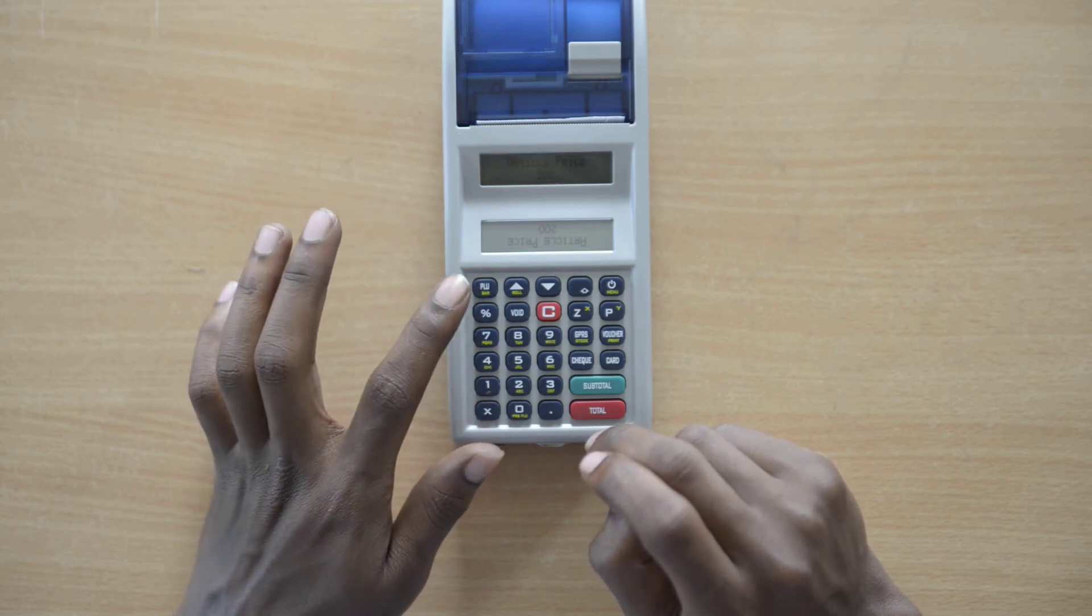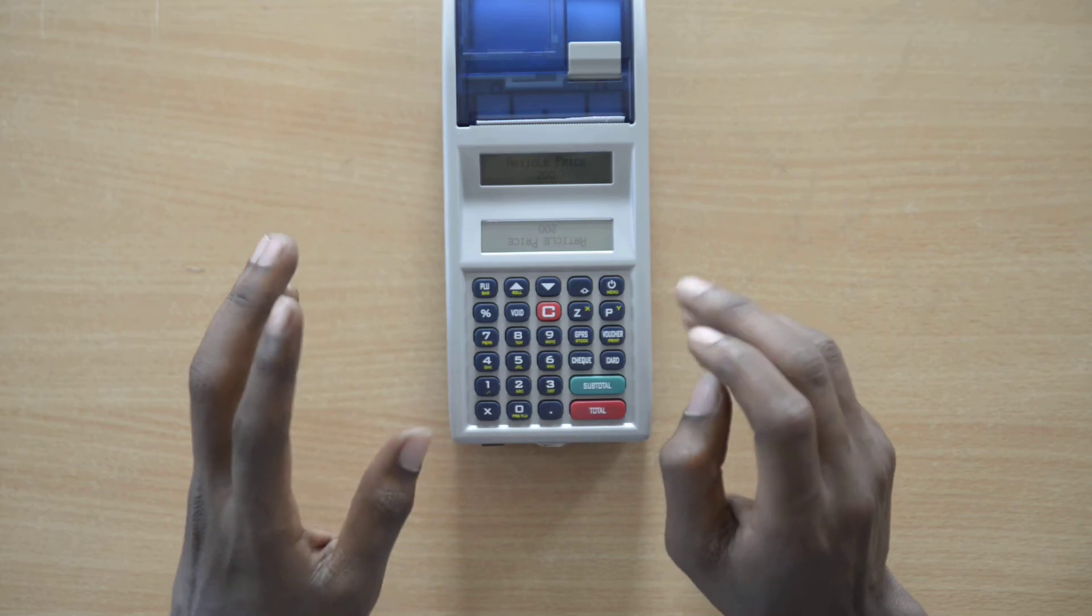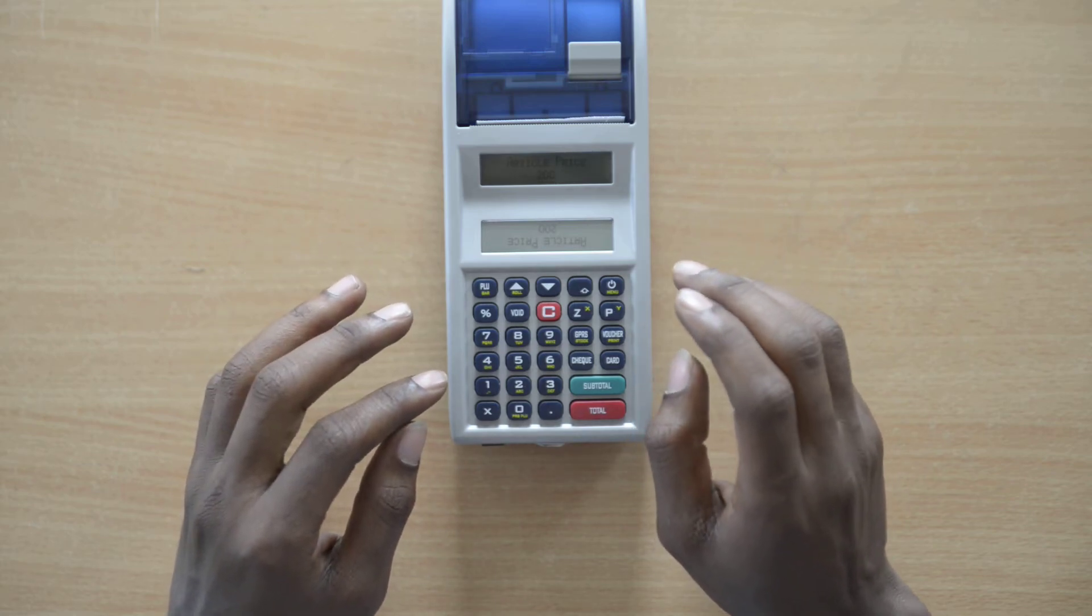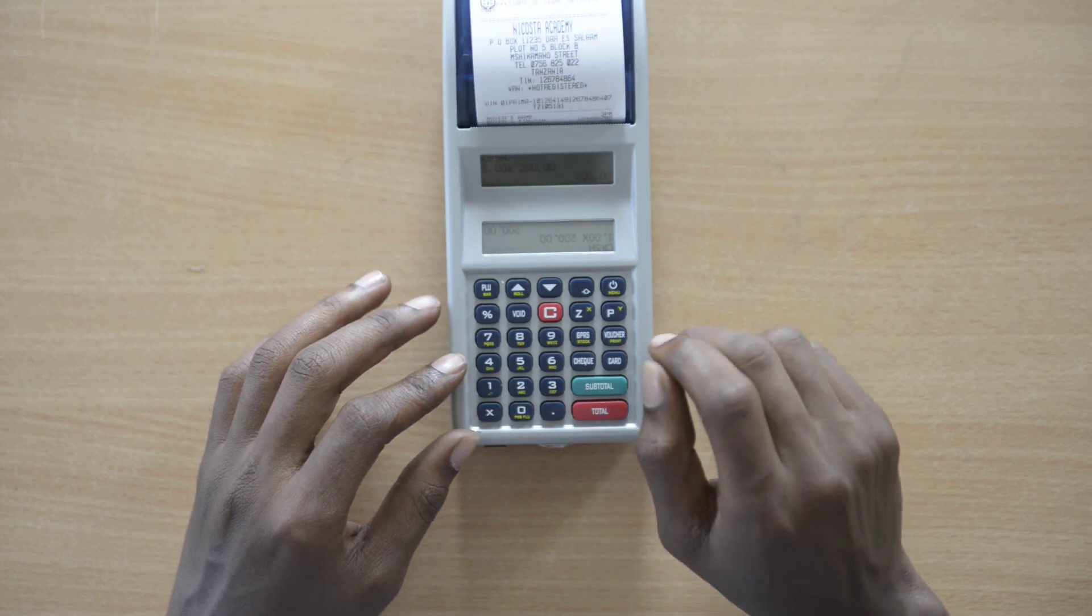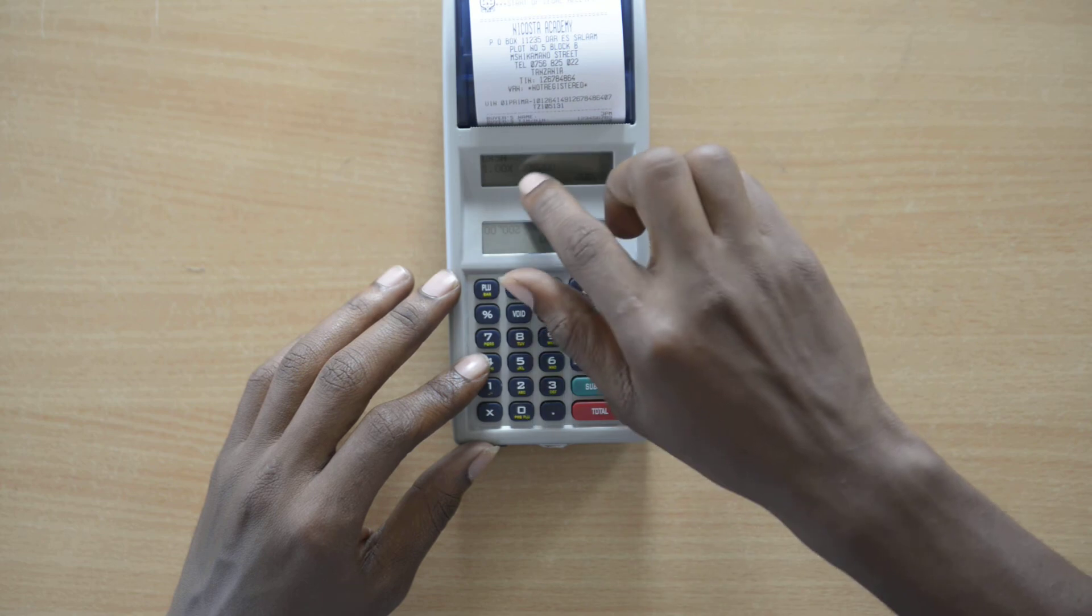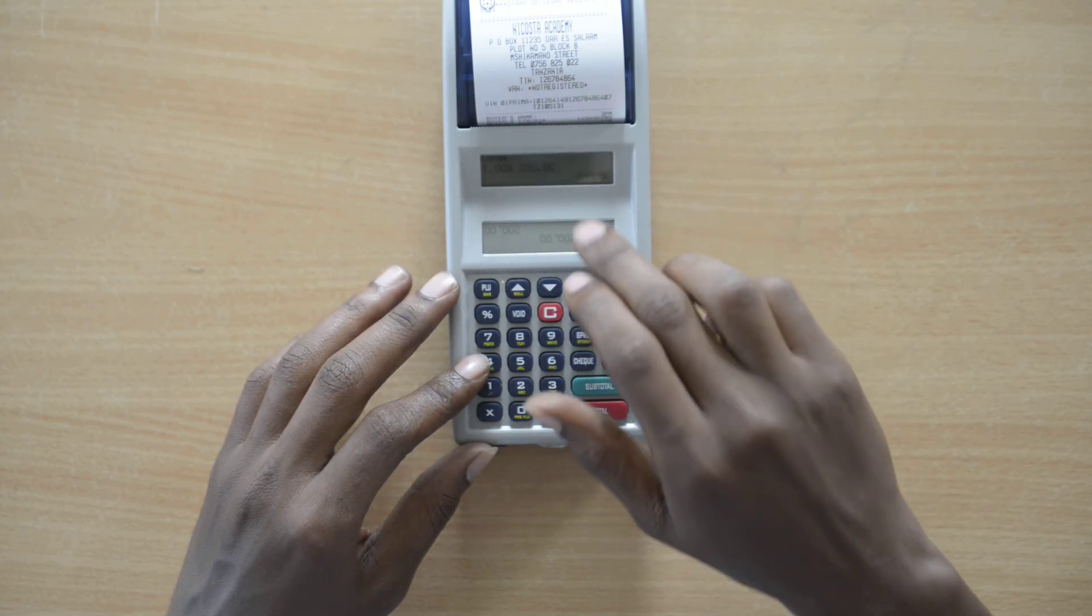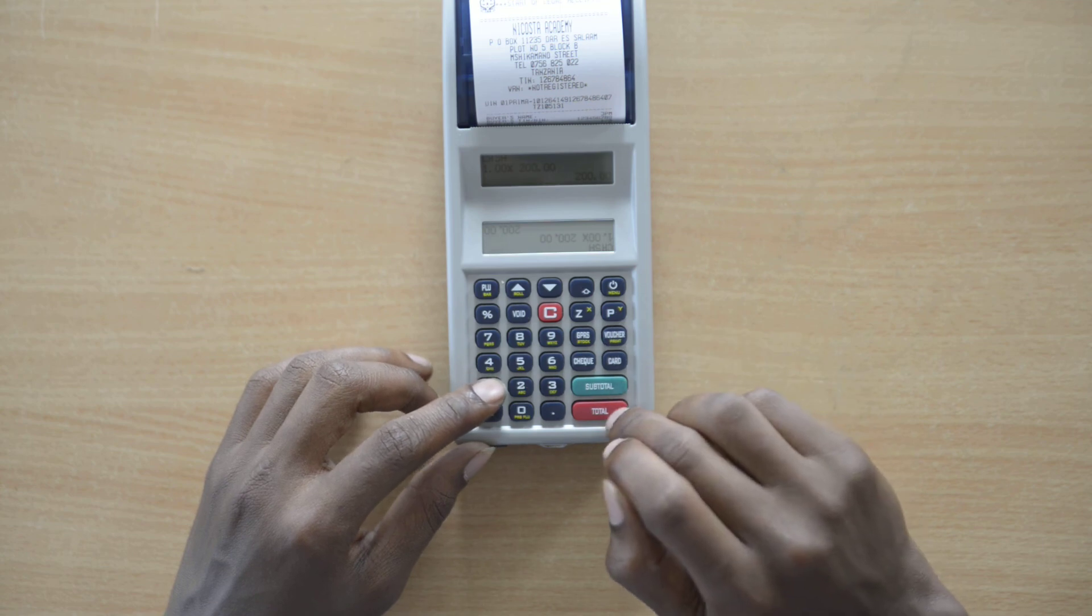The PLU stands for Product List Unit. You press PLU two times. After placing PLU, it will print out, then you can confirm the amount as well as the item. If it's OK, you finally replace total.